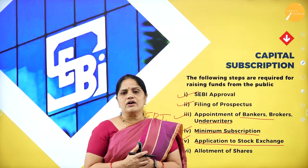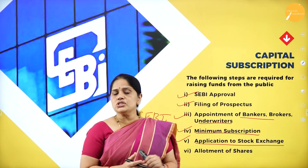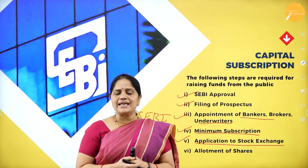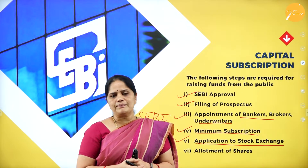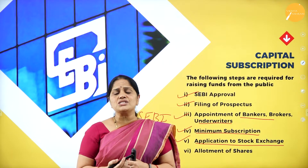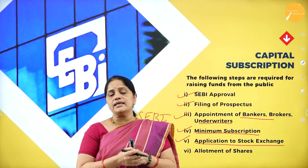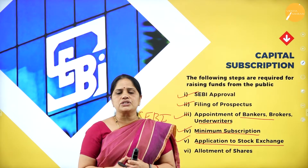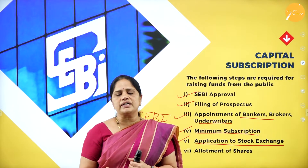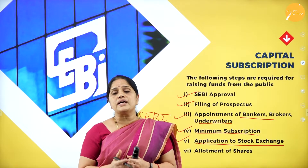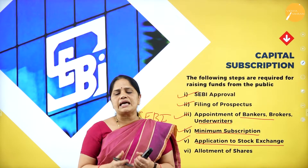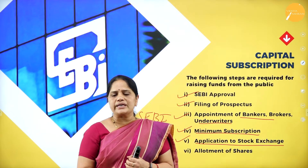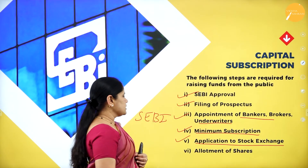The next step in raising funds is application to the stock exchange. The company going for a public issue must get approval from at least one stock exchange. If permission from the stock exchange has not been received even after 10 weeks from submission of the application, then the company cannot go in for allotment of shares and must return the money to the shareholders.